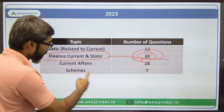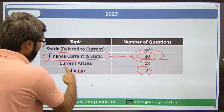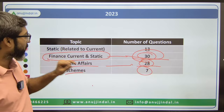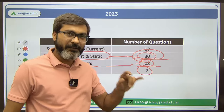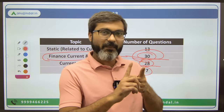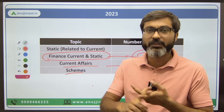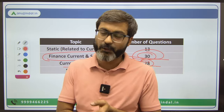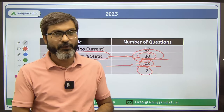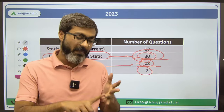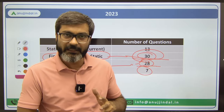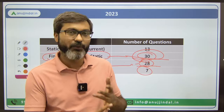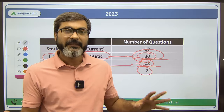In 2023, scheme questions were reduced and basic current affairs were also reduced. Current affairs normally includes Budget, Economic Survey, Sports, Annual Reports, Indices and Reports, Important Days, Awards and Honours, Important Personalities, National News, International News, and Defence News - all of that and more.